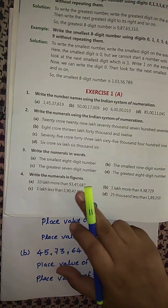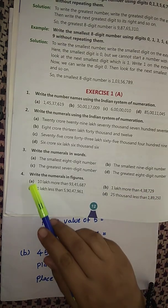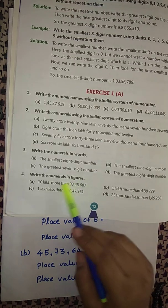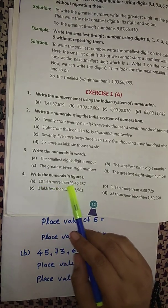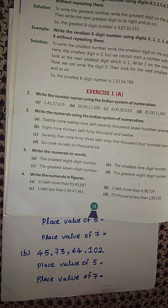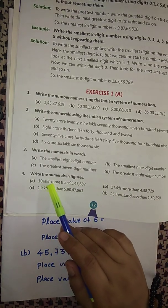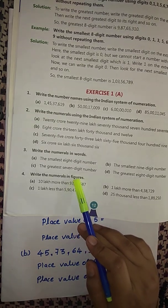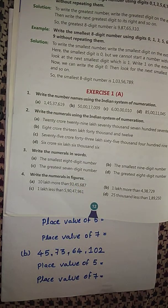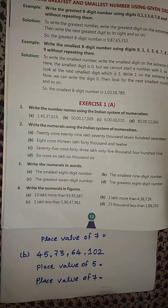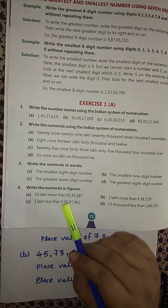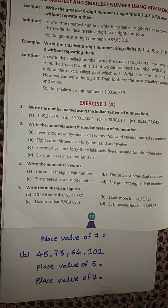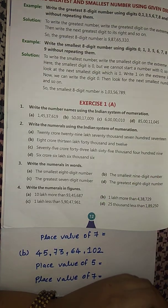Let's start with question number four. Question number four says: write the numeral in figures. We need to find out the numeral from the question and write it in figures. Question number four (a) says: 10 lakh more than 93,45,687. We need to solve this and find the answer in figures.